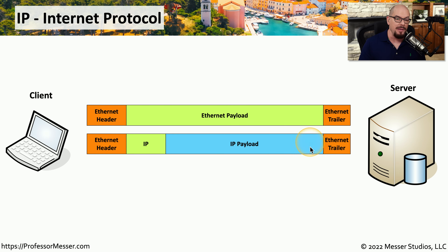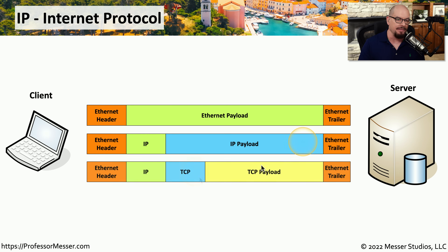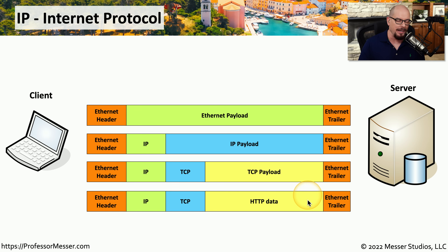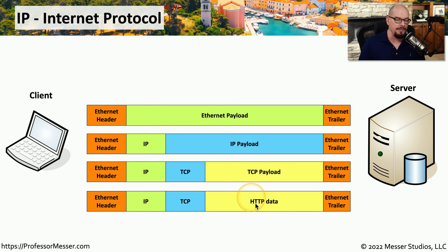The IP payload has information inside of it. This could be TCP data with a TCP header and a TCP payload. That TCP payload can be separated out into different types of data. So for this entire ethernet frame, inside we have IP, inside of IP we have TCP, and inside of TCP we have HTTP data.